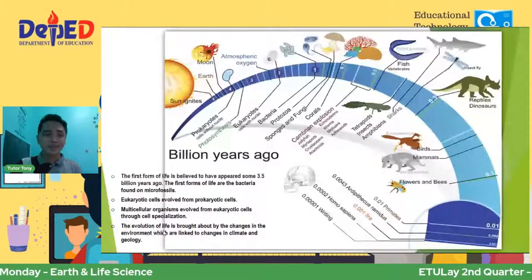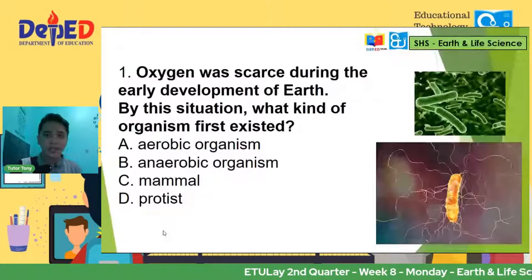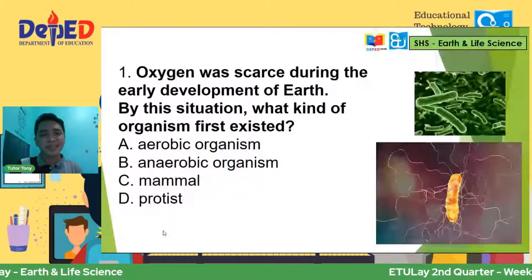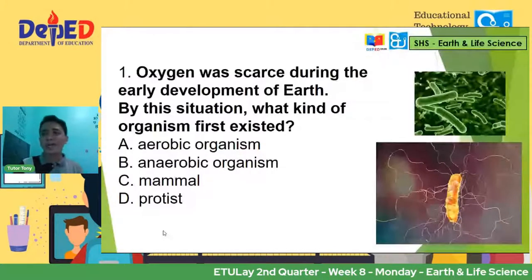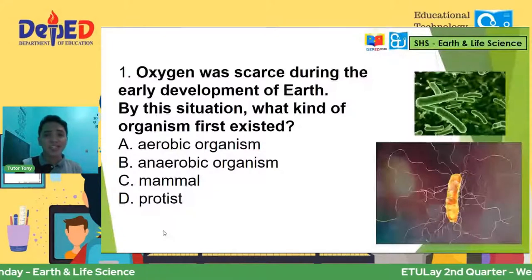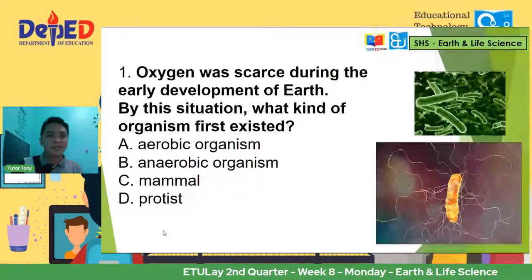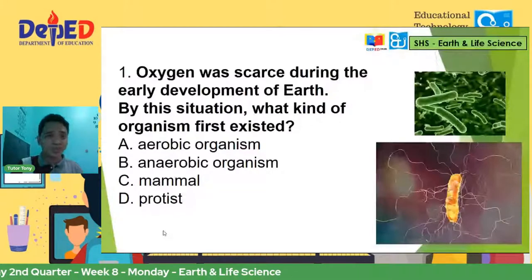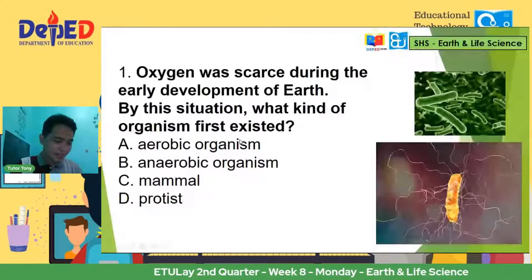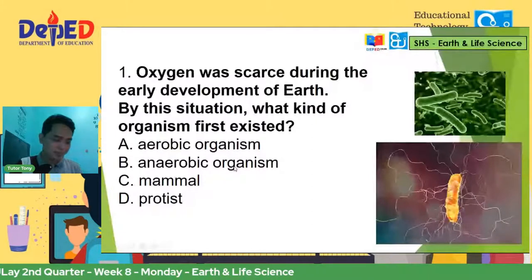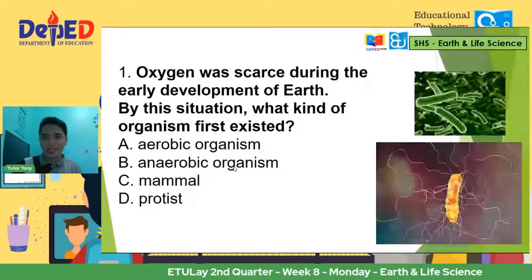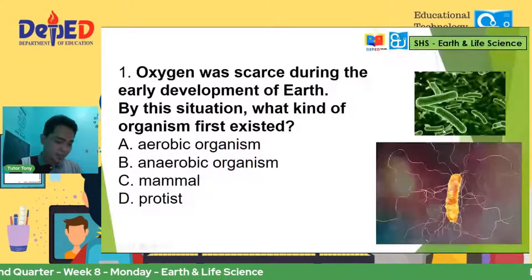So let's have the first question. Number one: oxygen was scarce during the early development of Earth. By this situation, what kind of organism first existed? So we'll look for clue words — oxygen was scarce, walang oxygen or not enough. Tanggalin natin si letter C at D kasi obviously hindi yung to survive during primitive Earth. You choose between aerobic and anaerobic. The correct answer is B — anaerobic organisms. They exist during that time. Correct, Miss Sally Candubo.